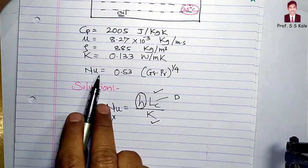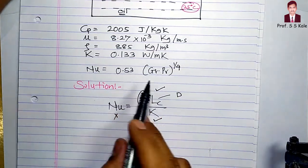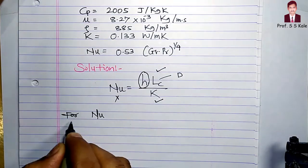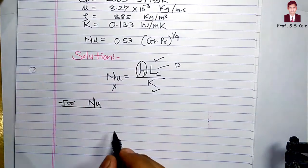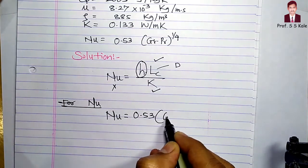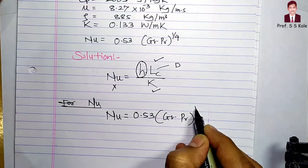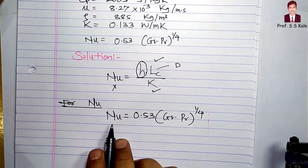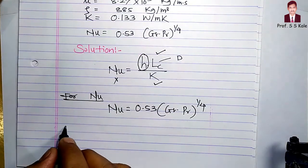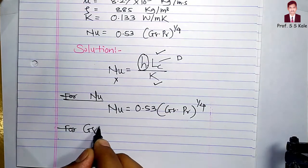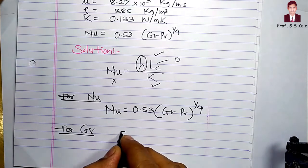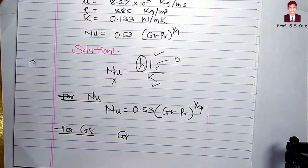For the Nusselt number, the formula is: Nu = 0.53 × (Gr × Pr)^(1/4). So Nusselt number can be determined if I know Gr and Pr. Let's proceed to determine the Grashof number Gr, since it is not yet known.